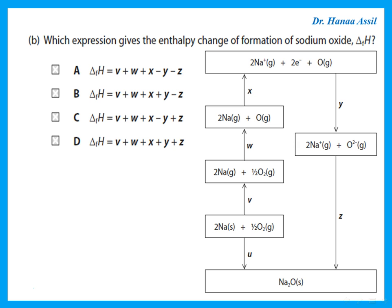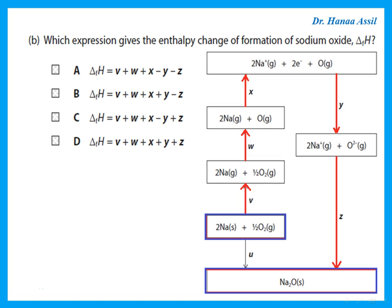Which expression gives the enthalpy change of formation of sodium oxide? The enthalpy of formation is the formation of a substance in its standard state from its elements in their standard state — Na solid and O₂ gas forming Na₂O solid. The total of all steps V, W, X, Y, and Z gives the delta H of formation of Na₂O.